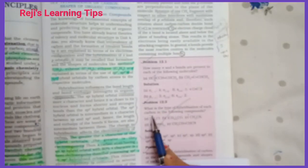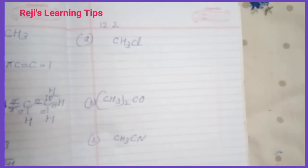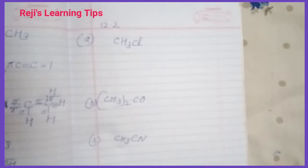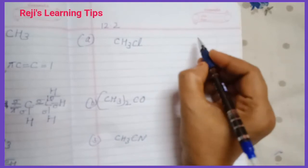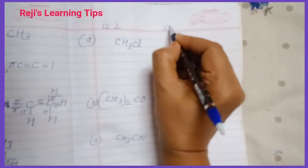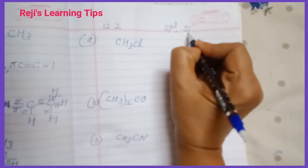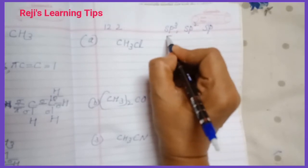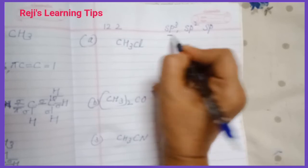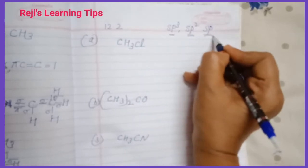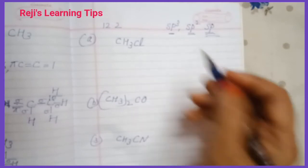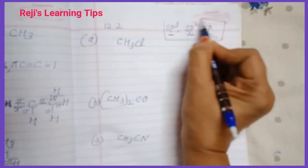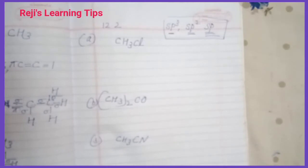Now, question 2: what is the type of hybridization of each carbon in the following compound? The rule is: a single bond carbon is SP3, a double bond carbon is SP2, and a triple bond carbon is SP hybridization.